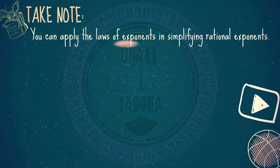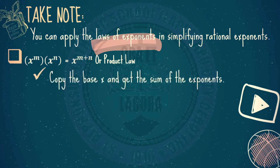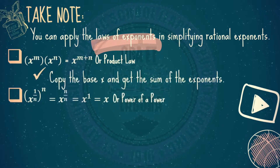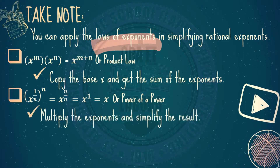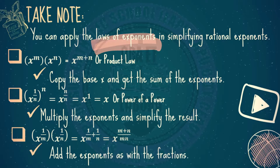Take note: you can apply the laws of exponents in simplifying rational exponents, such as the product law, wherein you copy the base and get the sum of the exponents. You can also apply the power of a power, wherein you multiply the exponents and simplify the result. Or you can apply x raised to 1 over m times x raised to 1 over n equals x raised to 1 over m plus n all over mn, wherein you find the LCD of the denominator and add exponents as with fractions.